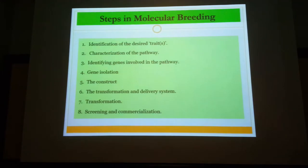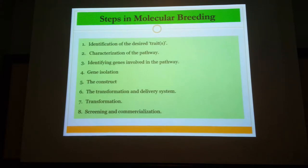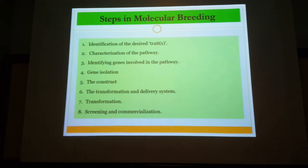These are the steps involved in molecular breeding: first, identify the desired trait; then characterise the pathway and identify the gene or genes involved; isolate the genes; develop a construct using synthetic biology or PCR-based gene assembly; transform and deliver; then screen and commercialise the plant.